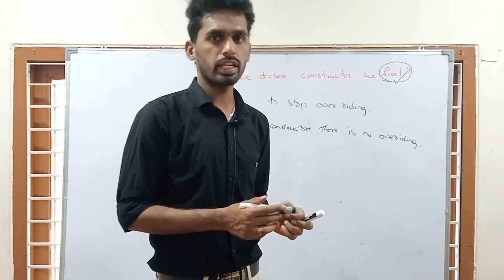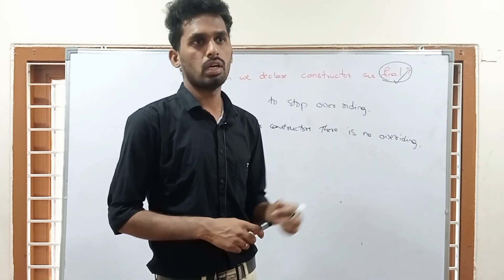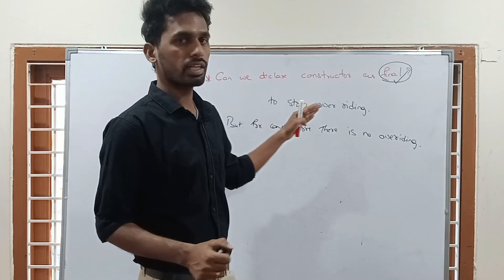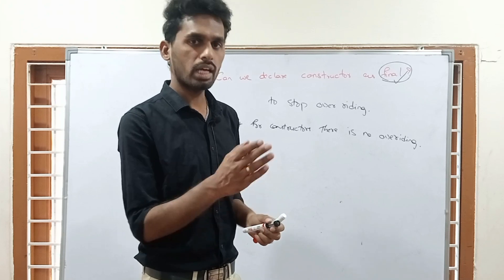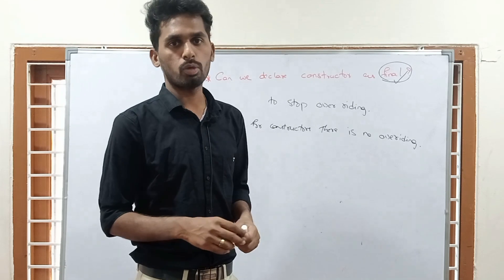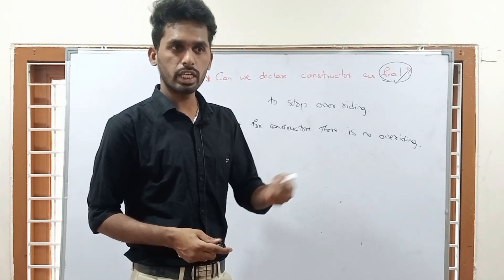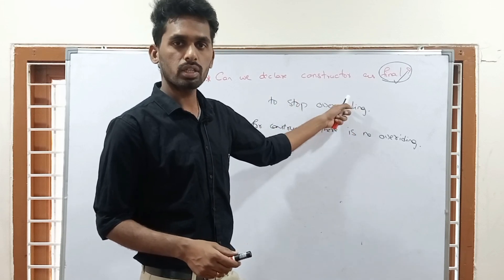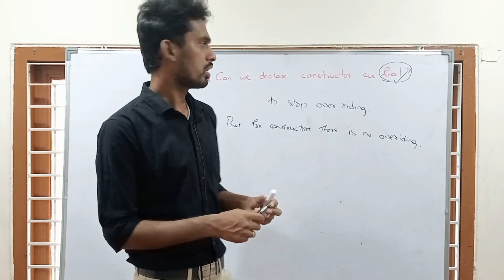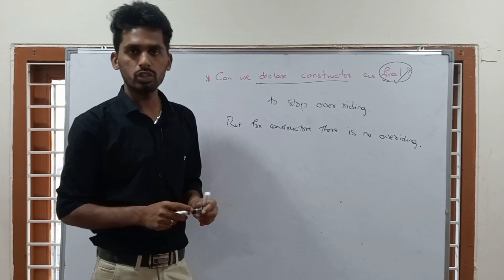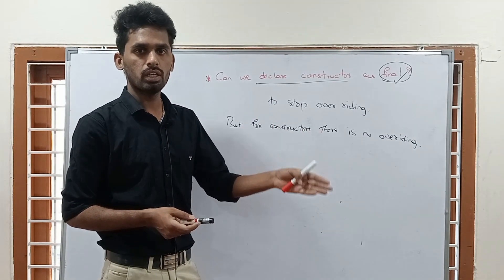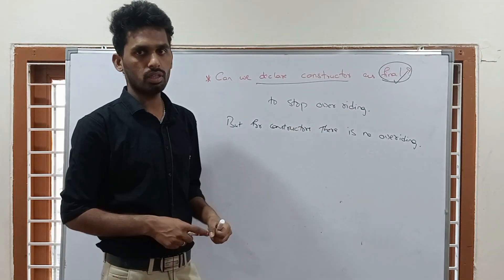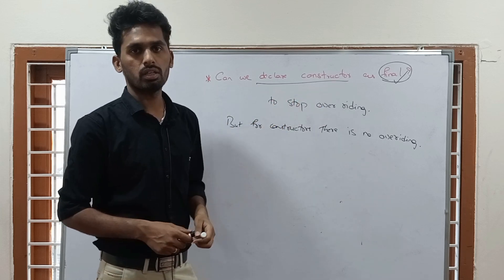It is simply like this: if you have secrets on your mobile, you will keep a password to hide them. But if there are no secrets, what is the use of keeping a password? It's not required. Similarly, we use the final keyword to stop overriding. But for a constructor, there is no overriding. So what is the use of declaring a constructor as final? It doesn't make sense.